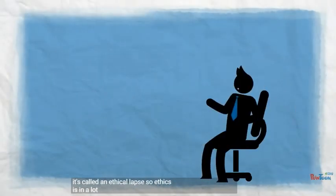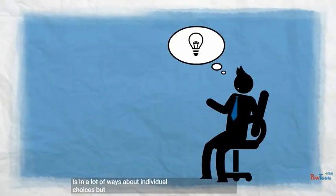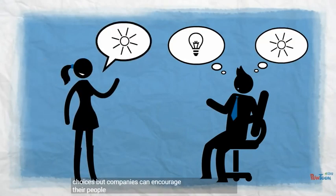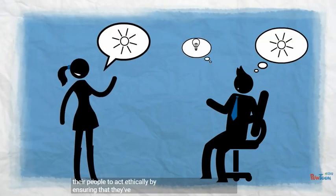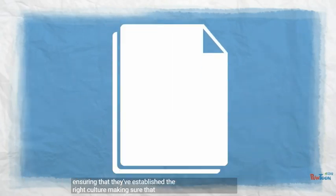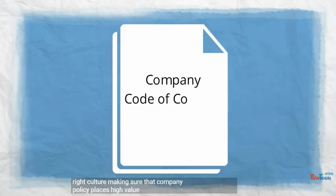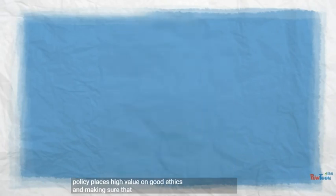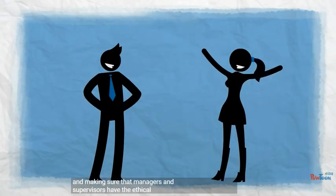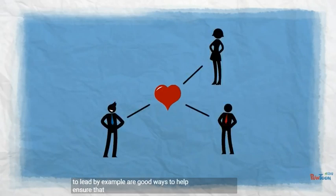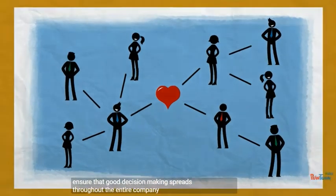So ethics is, in a lot of ways, about individual choices. But companies can encourage their people to act ethically by ensuring that they've established the right culture. Making sure that company policy places high value on good ethics and making sure that managers and supervisors have the ethical integrity to lead by example are good ways to help ensure that good decision-making spreads throughout the entire company.